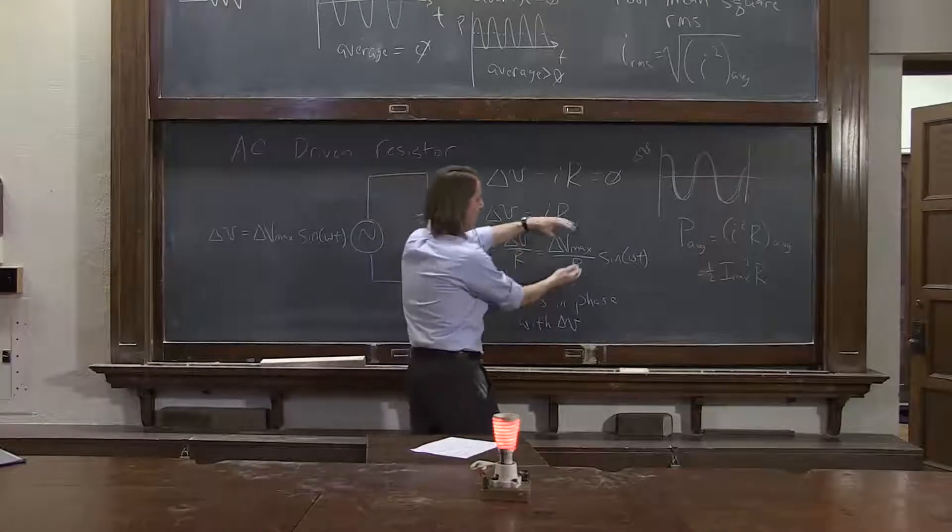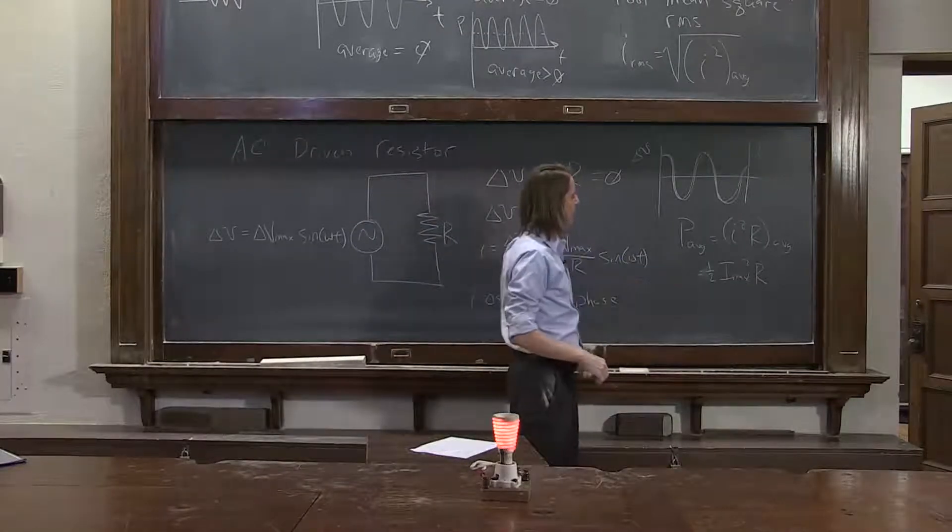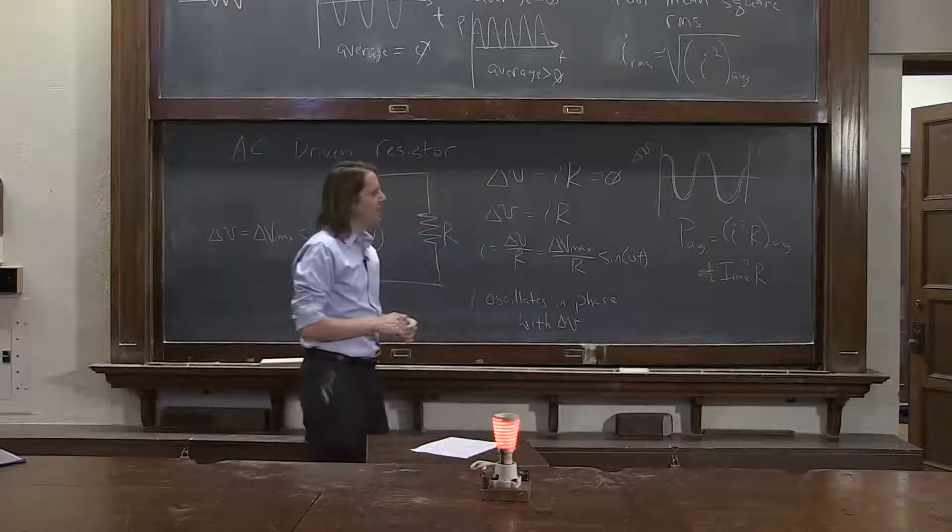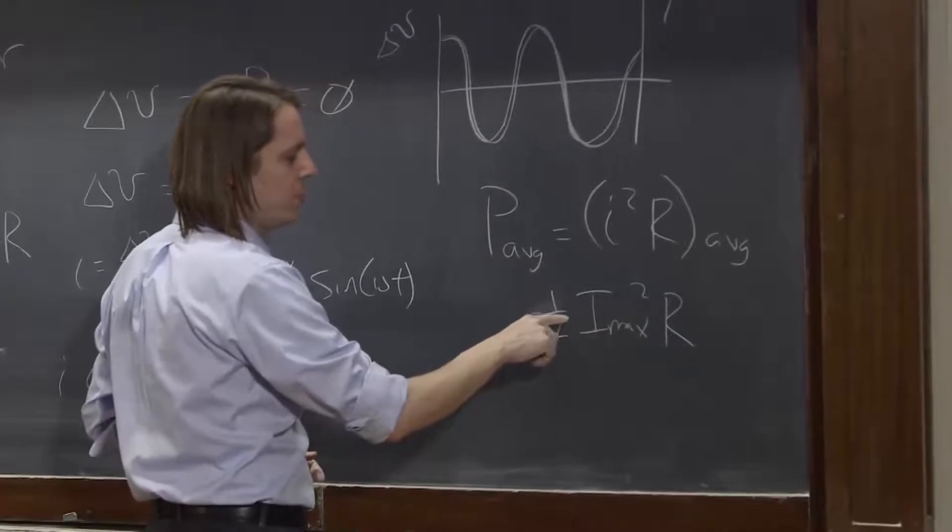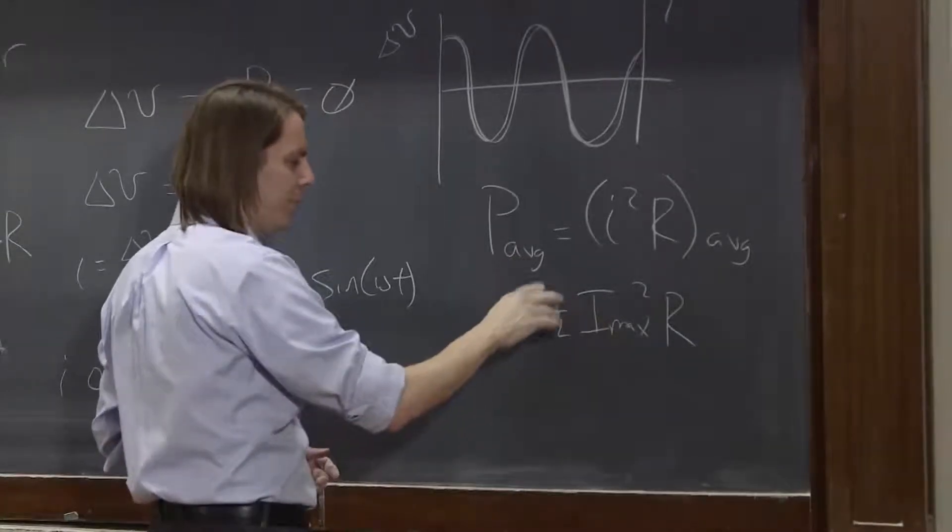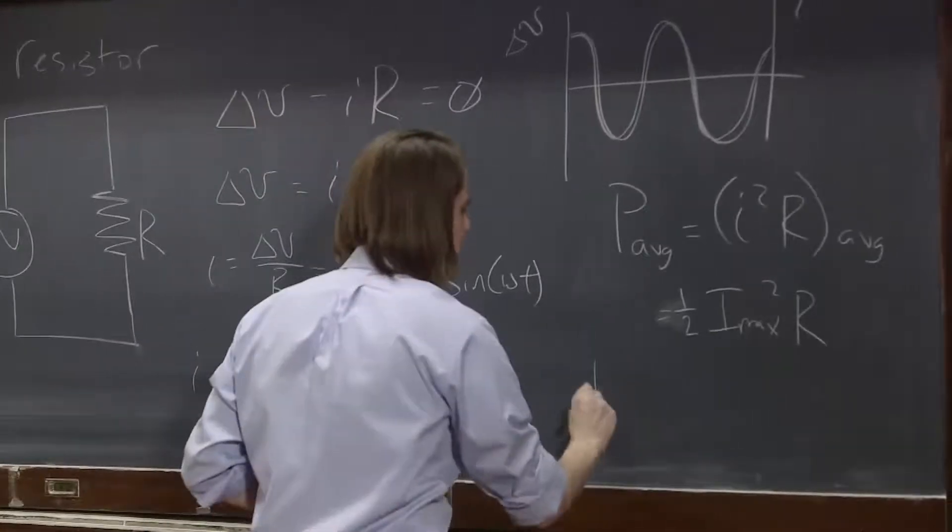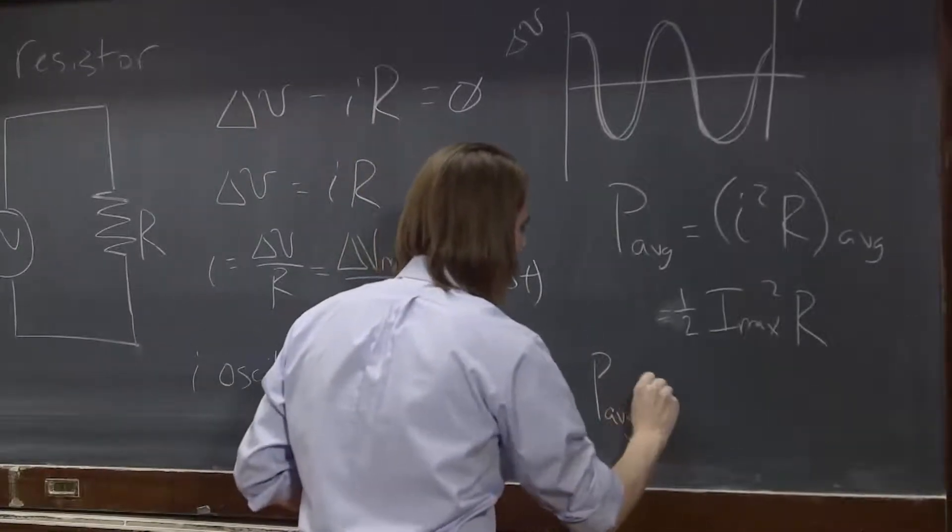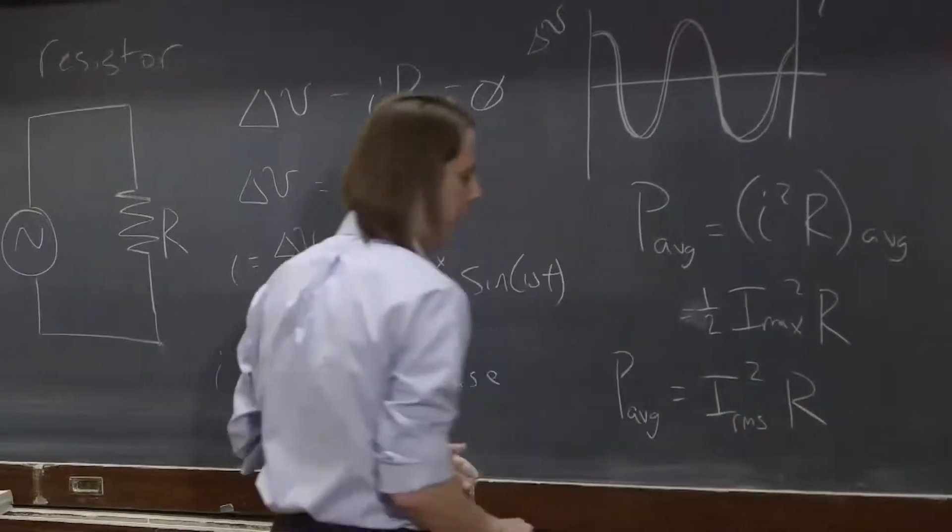So hopefully you can see what we did there. I max is this thing right here. We squared that. We squared sine omega T. That's where the half comes from. So P average is that. But then if you look, you see this is 1 over the square root of 2 times I max times 1 over the square root of 2 times I max. That's the RMS. So we get that P average is I RMS squared times R.